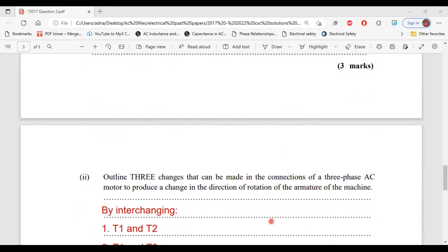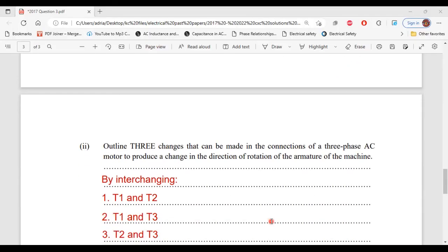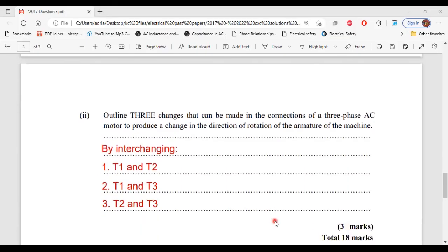Part two says, outline three changes that can be made in the connections of a three-phase AC motor to produce a change in direction of rotation of the armature of the machine. The change in direction of rotation of the armature can be done by interchanging T1 and T2, or T1 and T3, or T2 and T3. That's it for part two, and that's it for this question.